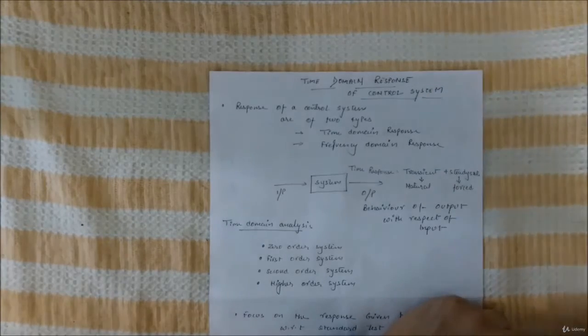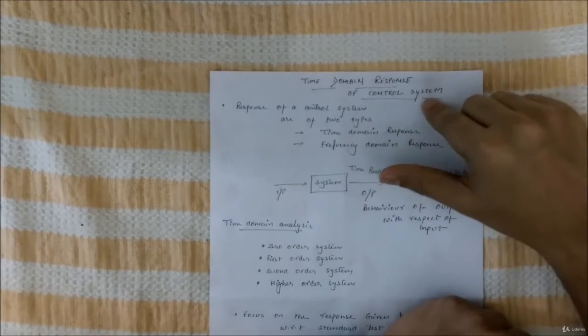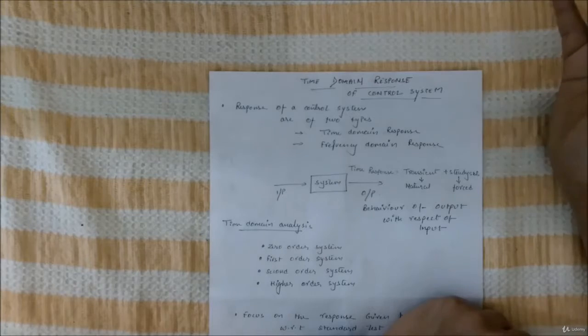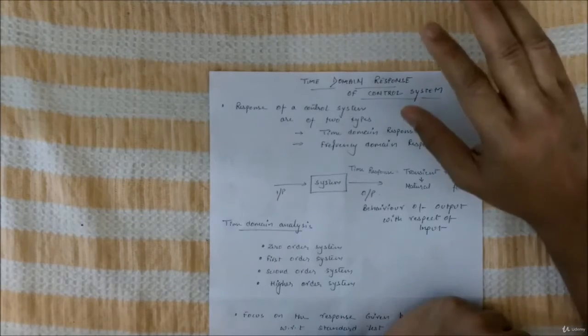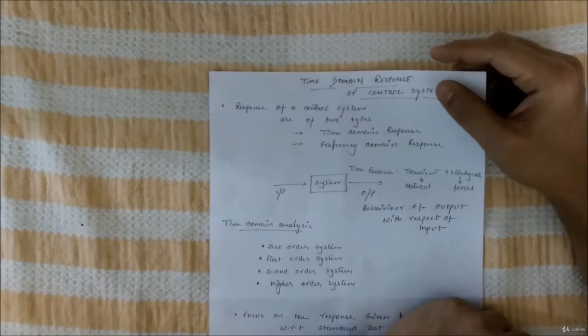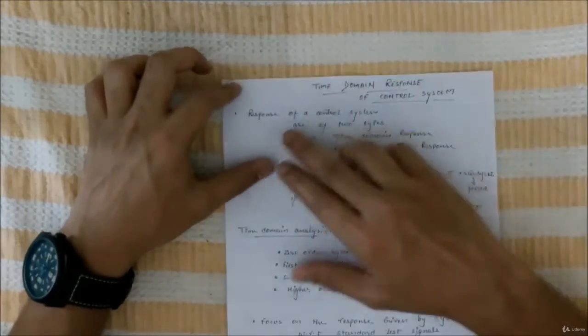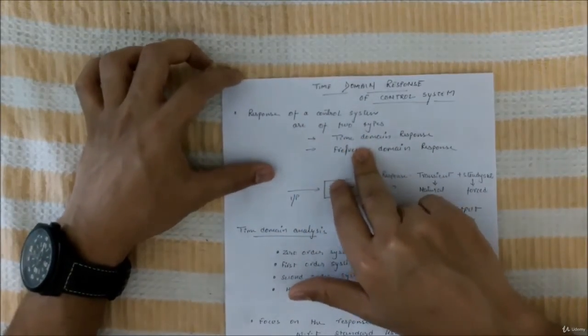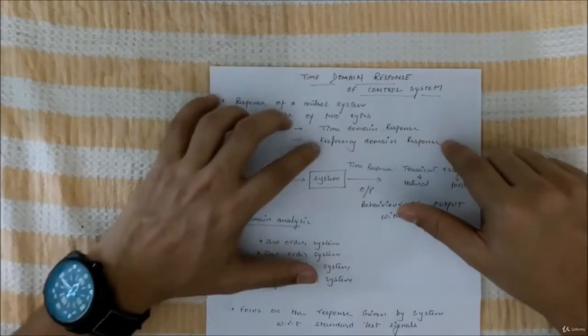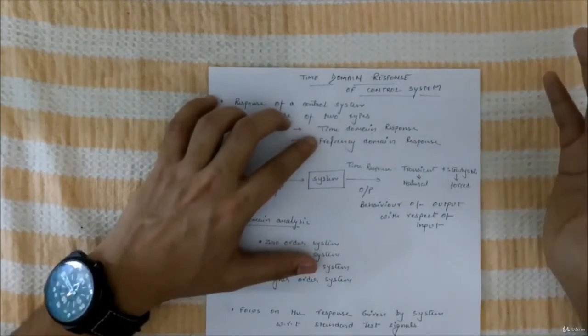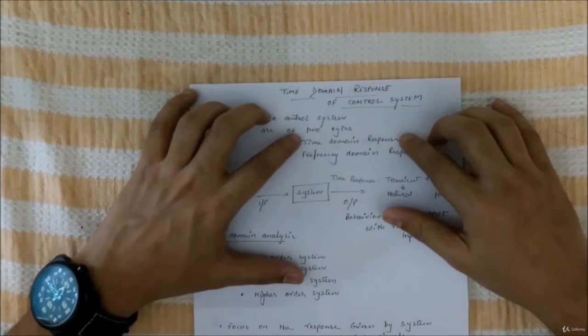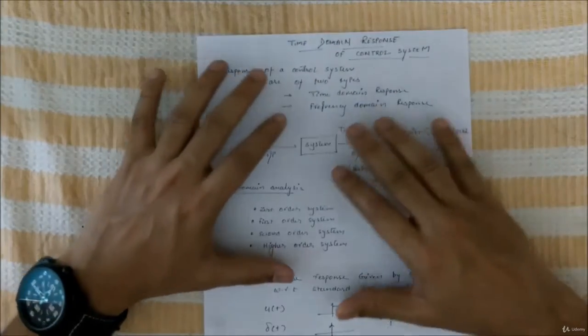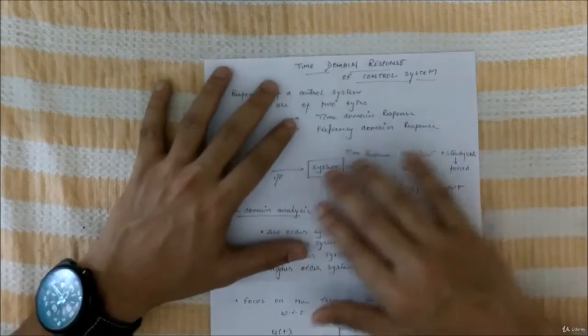If you know about these topics or if you have seen those videos, then I'll start. You can see response of a control system are of two types: time domain response and frequency domain response. Frequency domain response we will cover later. First, I'll rigorously cover time domain response.